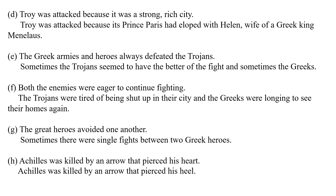Fourth: 'Troy was attacked because it was a strong rich city' — No, that is not the reason. Correct: Troy was attacked because its prince Paris had eloped with Helen, the wife of Greek king Menelaus. Fifth: 'The Greek armies and heroes always defeated the Trojans' — No. Correct: Sometimes Trojans seemed to have the better of the fight and sometimes the Greeks; both enemies were eager to continue fighting. The Trojans were tired of being shut up in their city and the Greeks were longing to see their homes again. Sixth: 'The great heroes avoided one another' — Correct: Sometimes there were single fights between two great heroes. Seventh: 'Achilles was killed by an arrow that pierced his heart' — No. Correct: Achilles was killed by the arrow that pierced his heel.